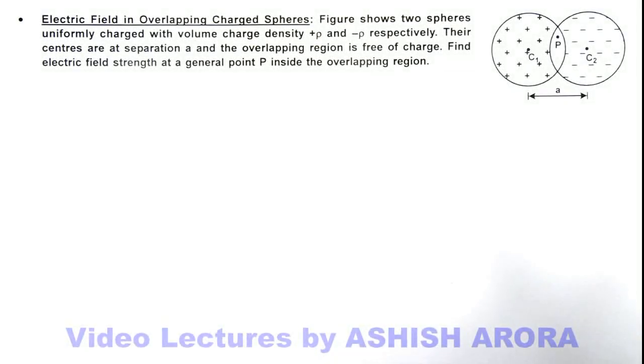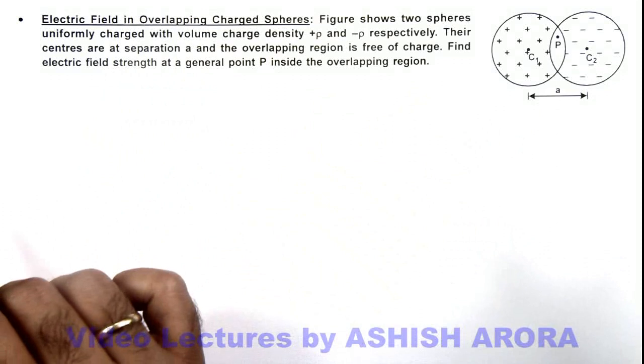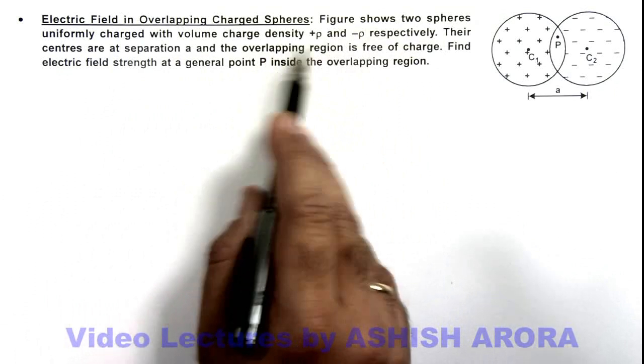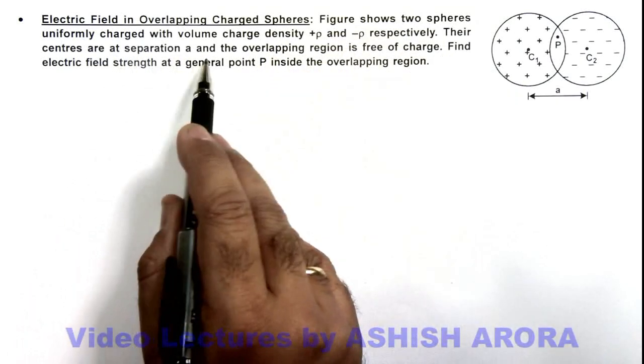In this illustration, we are analyzing the electric field in overlapping charged spheres. You can see the picture. Here it says figure shows two spheres uniformly charged with volume density plus ρ and minus ρ, and the centers are at a separation a.